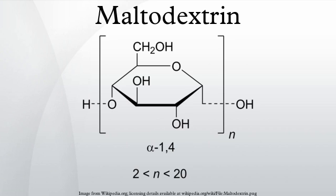Above DE 20, the European Union CN code calls it glucose syrup. At DE 10 or lower, the customs CN code nomenclature classifies maltodextrins as dextrins.